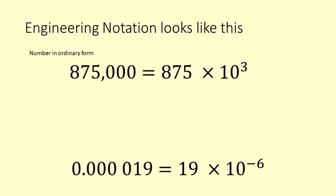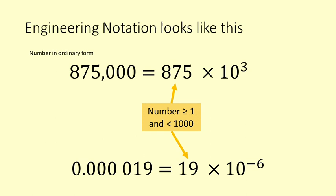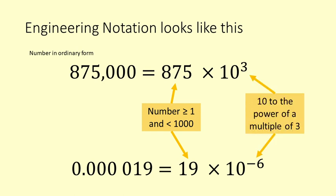Engineering notation is used for writing large numbers and small numbers in a convenient way. The first part of the number will be a number greater than or equal to 1 and less than 1,000. Then you have times 10 to the power of something, and that power must be a multiple of 3 — and it can be 0, which is a multiple of 3.